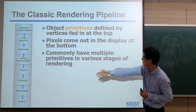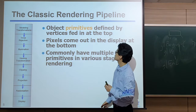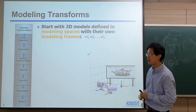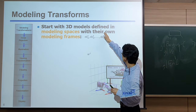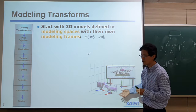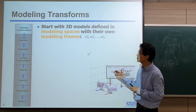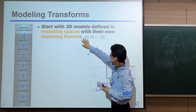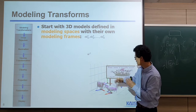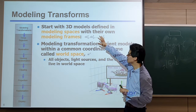In the middle are the main steps that consist of the rendering pipeline, which we'll talk about one by one. Once we specify triangle vertices, it starts with a 3D model defined in modeling space. Suppose you want to draw a car — each individual object is defined in its own modeling space, also called the modeling frame. Based on that, we transform the model into a particular position and orientation in our world. That's the modeling transformation.